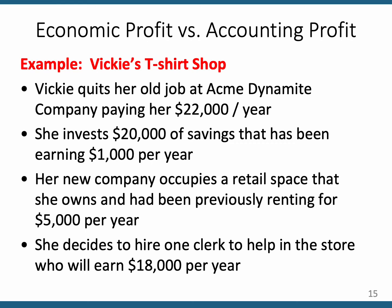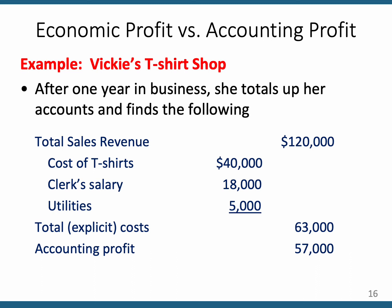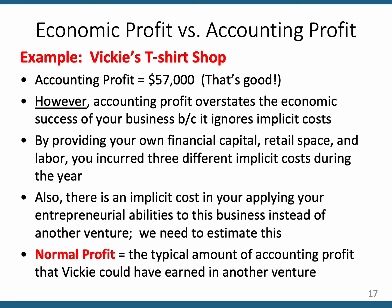Here's a summary. Total revenue is $120,000 per year. The cost of the t-shirts is $40,000, the clerk's salary is $18,000, and utilities are $5,000. These are all explicit costs, so total explicit costs are $63,000. Subtracting that from total revenue gives an accounting profit of $57,000. But you're ignoring those implicit costs: you provided your own financial capital, you were making money working for someone else, and you're using your own space you could be renting to others.